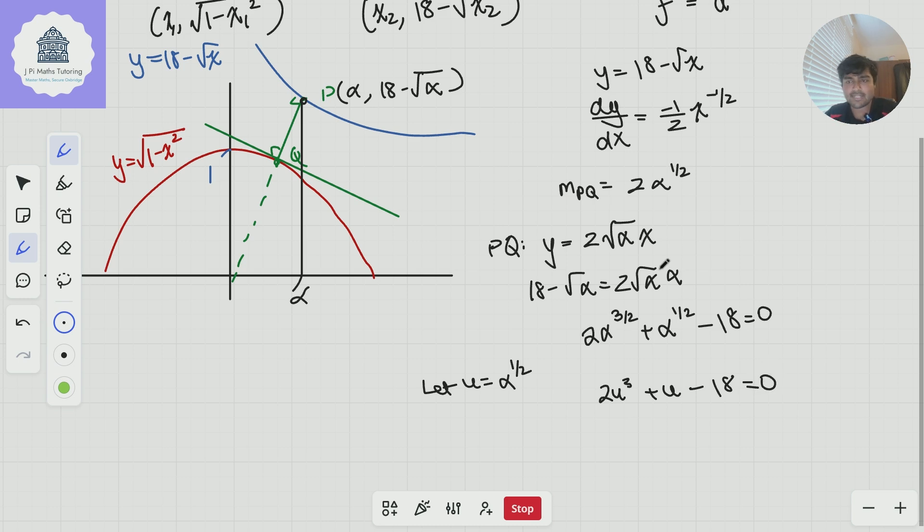So substituting that into this equation here, we get 18 minus √α equals 2√α times α. And so if I bring everything onto one side, I get 2α^(3/2) plus α^(1/2) minus 18 equals zero. And it's not too difficult to see that this is simply a hidden cubic. So if I let u equal α^(1/2), I get 2u³ plus u minus 18 is zero. We stare at this for a second and we see, amazing, u equals 2 is a solution to this because two times eight is 16 plus two is 18 minus 18 is zero.